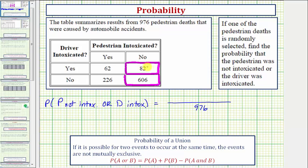This row here represents the number of deaths where the driver was intoxicated. But we've already counted these 82 deaths as favorable ways. And therefore, we only add in these 62 favorable ways.